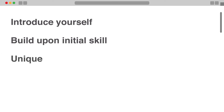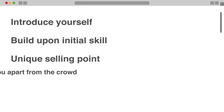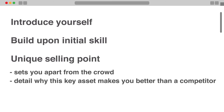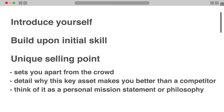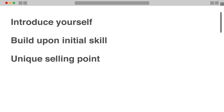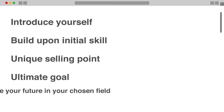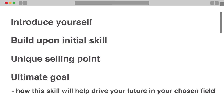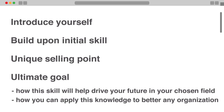Next, include a unique selling point that sets you apart from the crowd. Detail why this key asset makes you better than a competitor who doesn't have the skill. Think of it as a personal mission statement or philosophy. Your unique selling point will directly lead into the ultimate goal you are working towards. Include how this skill will help drive your future in your chosen field and how you can apply this knowledge to better any organization you are a part of.